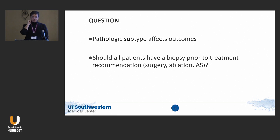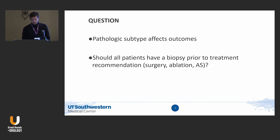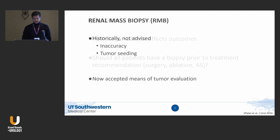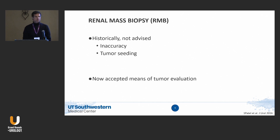Subtype affects outcomes. The big push by many of my colleagues in the renal cell carcinoma space is that we should biopsy everybody. I do not routinely biopsy. There is a big push that every renal mass should be biopsied — we biopsy every prostate and don't do radical prostatectomy without a tissue diagnosis. Historically, biopsies were not recommended because of tumor seeding concerns and inaccuracy, but now it is an accepted means of tumor evaluation.